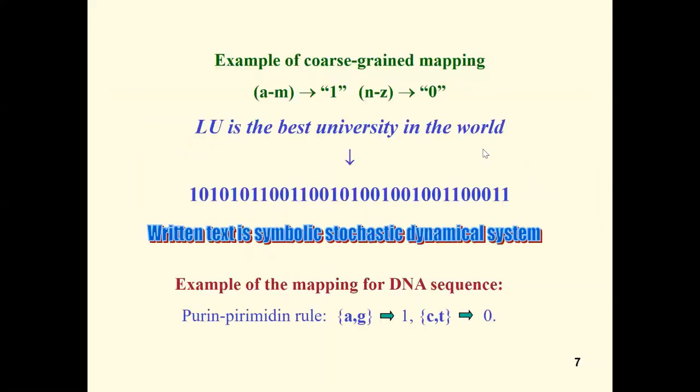On this slide we see an example of coarse graining of the text, that is its mapping to a binary sequence of symbols. It is clear that there exists a very great number of different coarse graining. Below we see a biological example of coarse graining where four nucleotides are mapped according to the rule specified here in the last line.